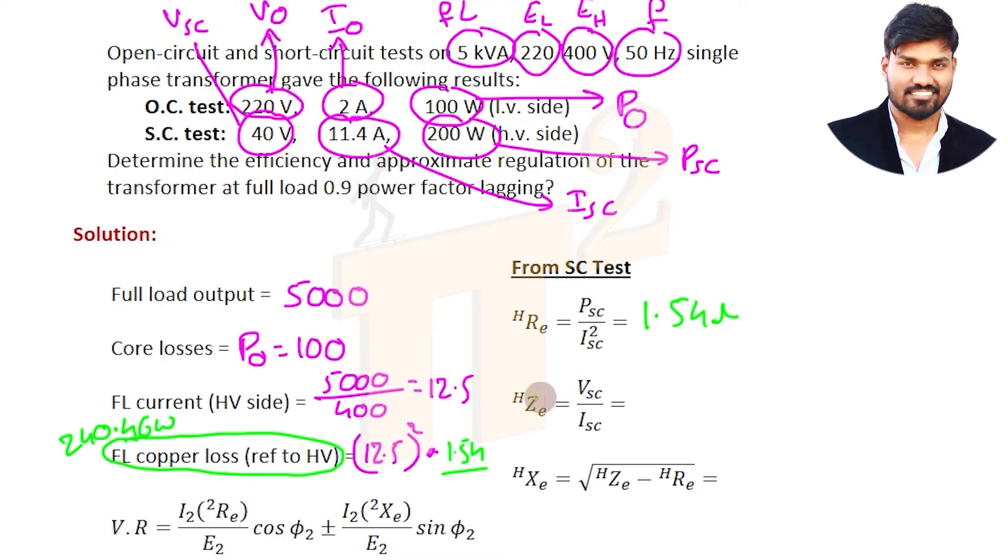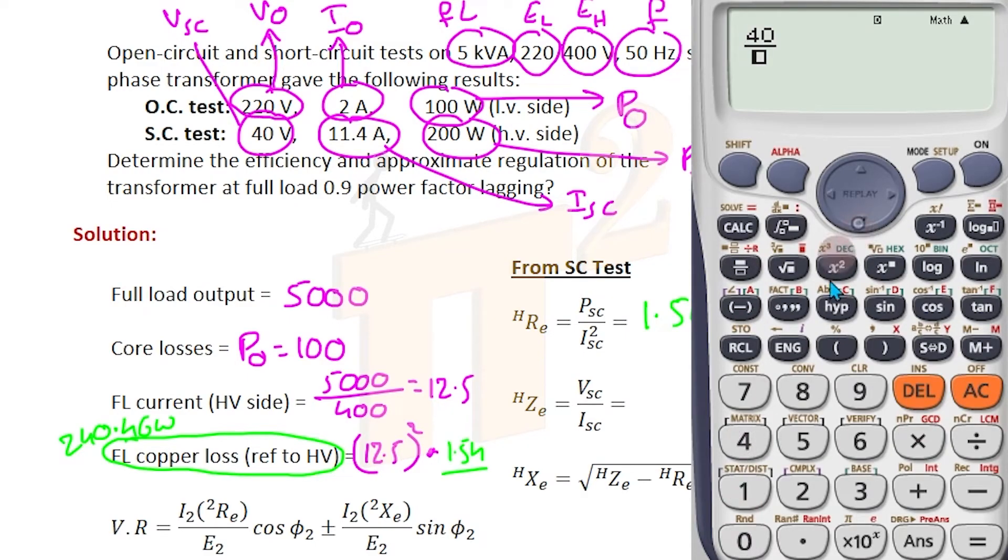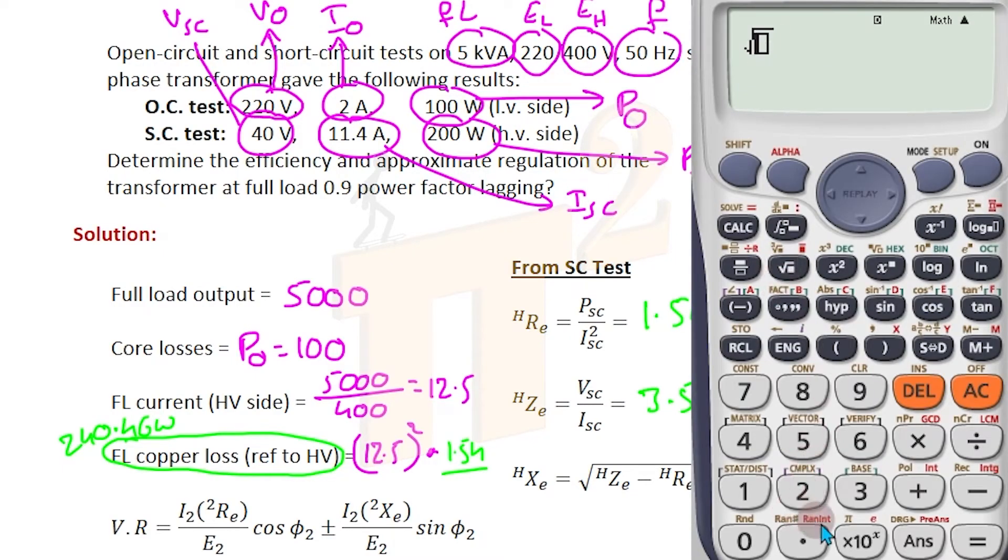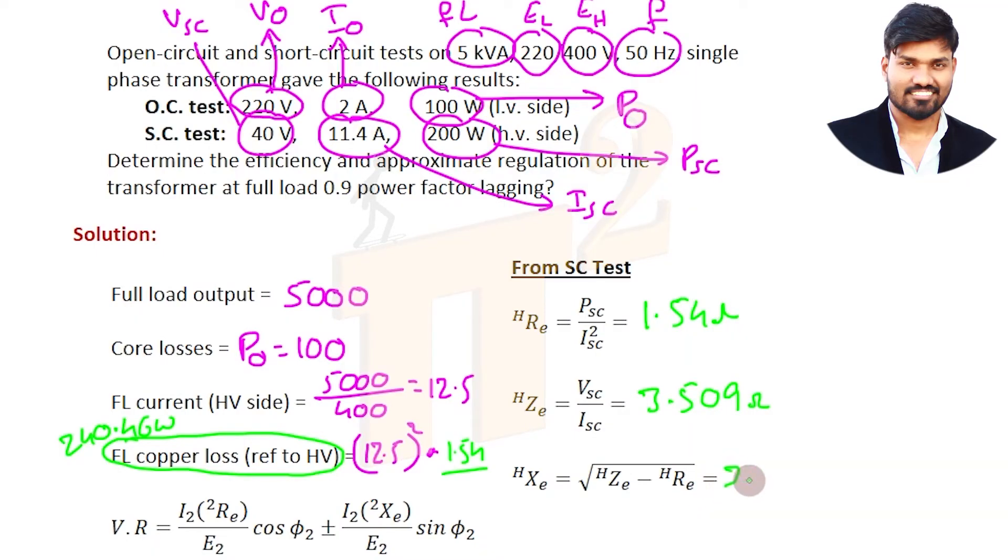Next comes Z_EH which is V_SC by I_SC, 40 by 11.4. This is Z_EH. Then X_EH just go for square root of 3.51 squared minus 1.54 squared. So X_E is 3.152 Ohms. We filled up this table.